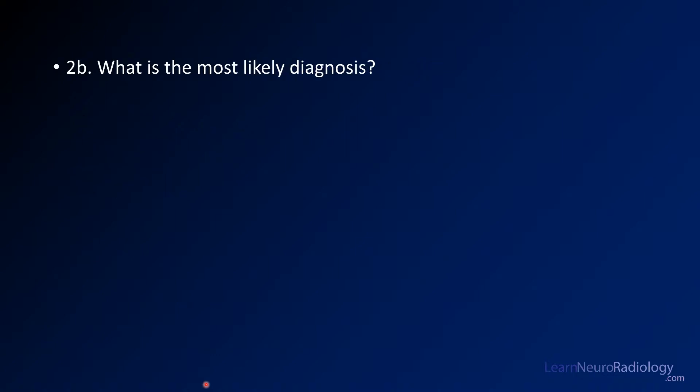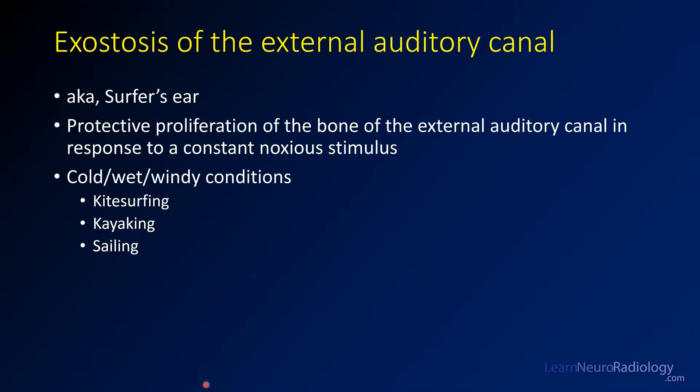Question number two is: what is the most likely diagnosis? We're dealing with a case of exostosis of the external auditory canal, or surfer's ear. This is a protective osseous proliferation of the bone of the EAC, usually from a constant noxious stimulus — most commonly cold or windy conditions. You'll often see this with surfing, swimming, kite surfing, and sailing.